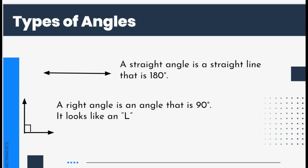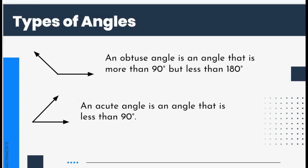The first is a straight angle, which is a straight line and measures at 180 degrees. The next is a right angle, which measures at 90 degrees and looks like an L — the two lines are perpendicular, meaning they form a 90 degree angle.